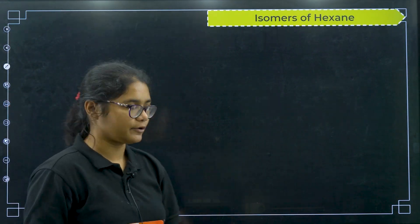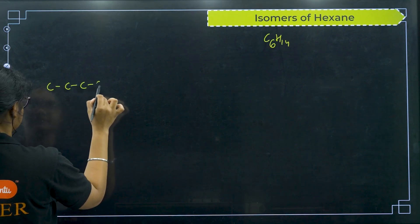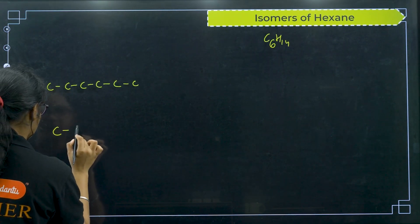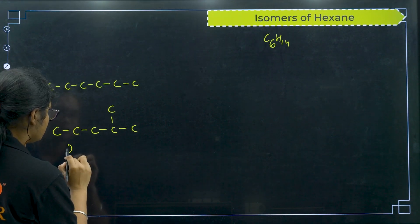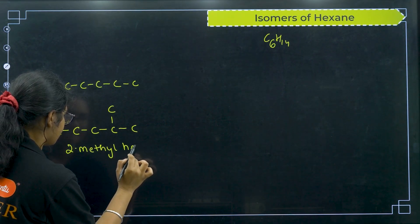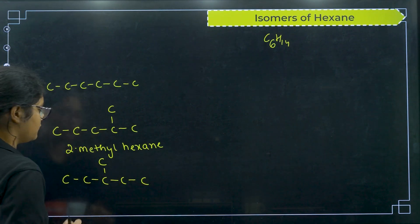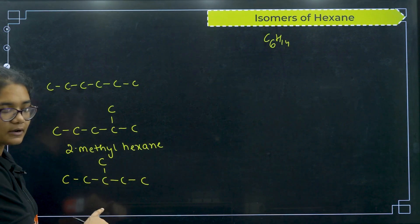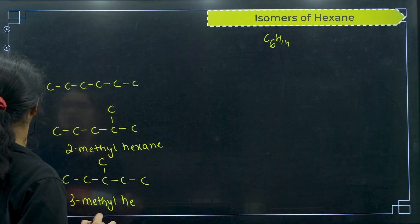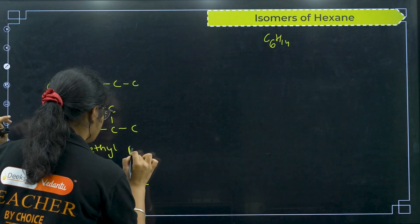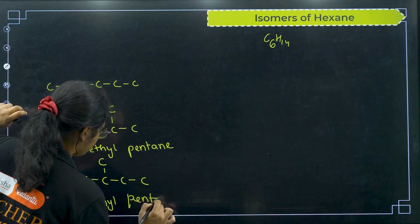Now let us do the isomers of hexane. Hexane is C6H14. First, 6 carbons in one chain — that is n-hexane. Next, 5 carbons in one chain with the 6th carbon placed at position 2 gives 2-methylpentane, and placing it at position 3 gives 3-methylpentane — so from the 5-carbon chain I get 2 isomers.